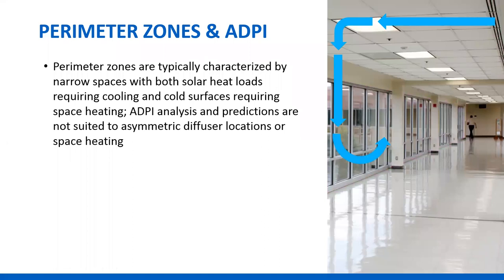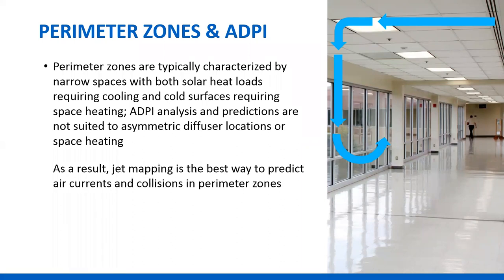What you've got to do is jet mapping. In this example, air moves across the ceiling and comes down the windows. In this cooling example, it will then be warmed and circulate into the space. We can look at the throw data that's in the catalogs to figure out where the jet is going to go.